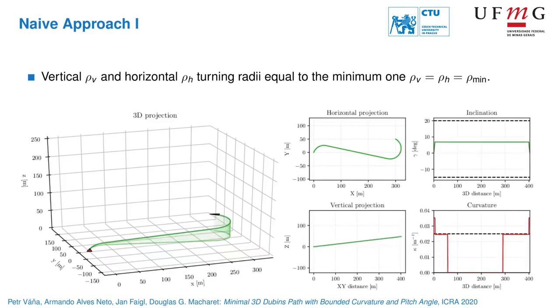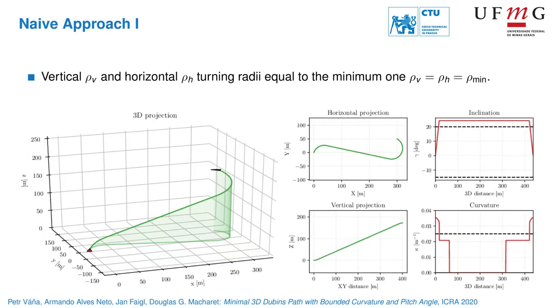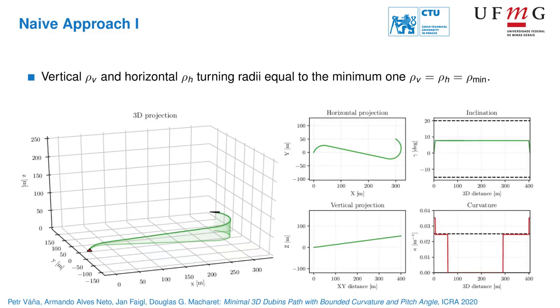We can demonstrate the proposed idea in the following animation. First, we show the case when the minimum turning radius is applied for both horizontal and vertical parts.